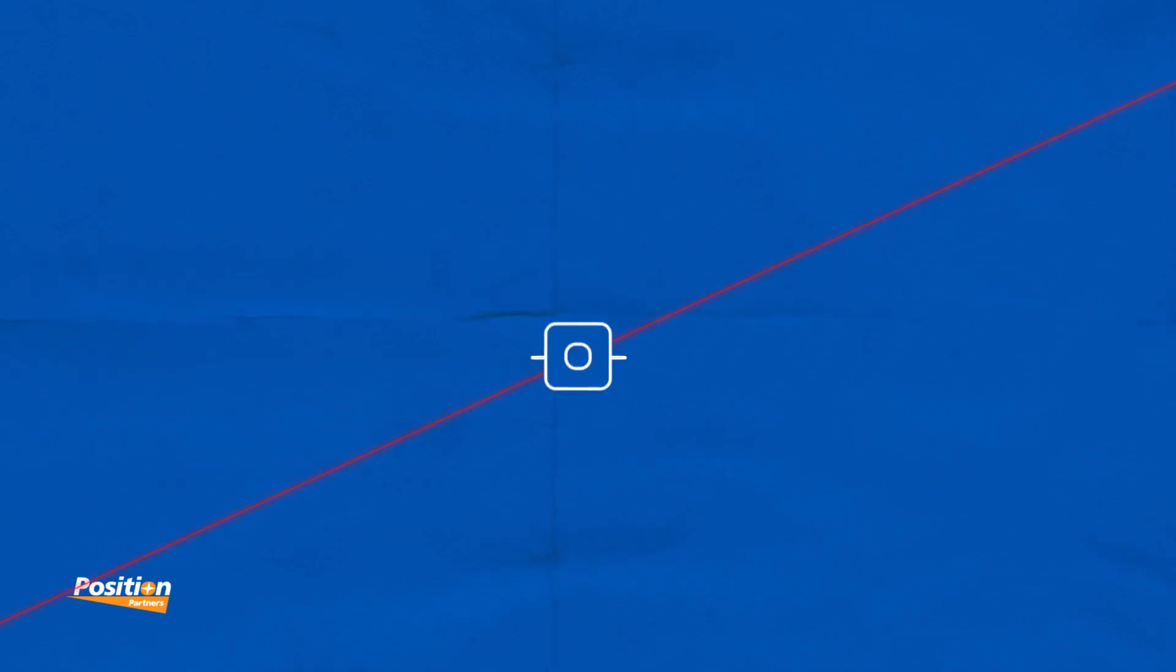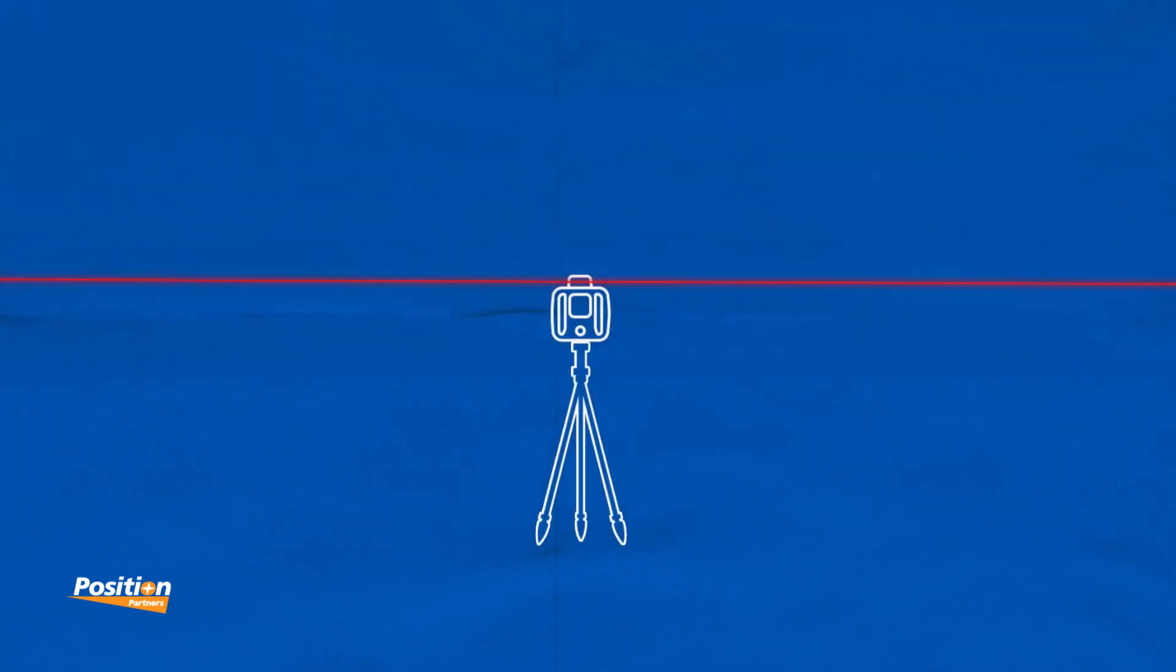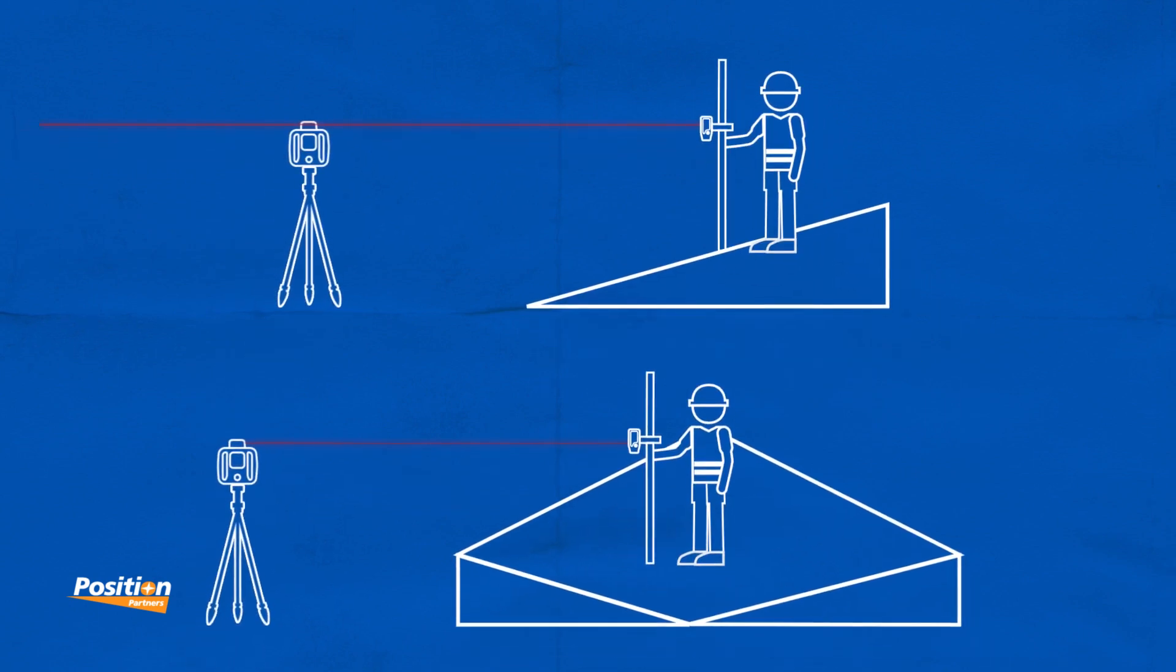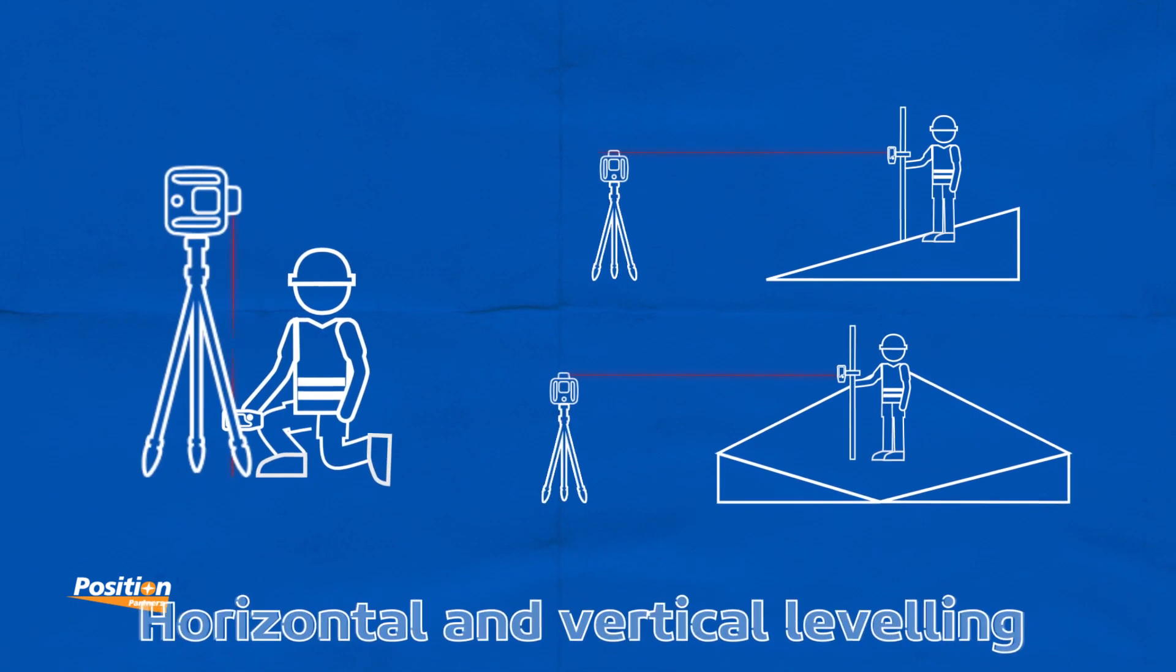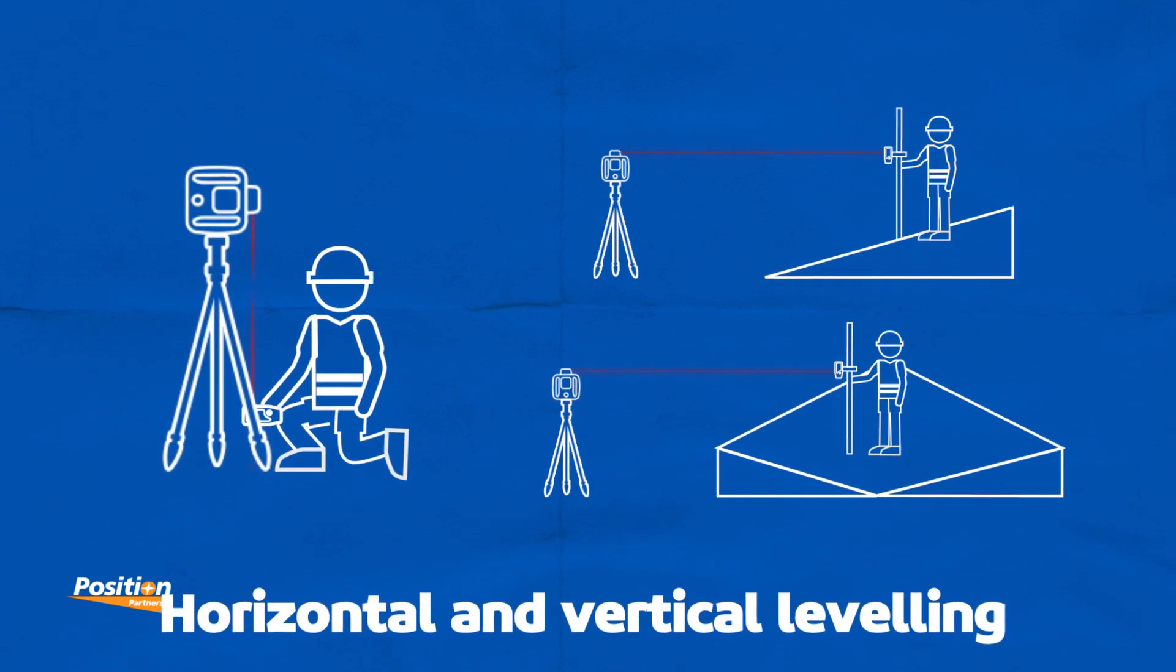Rotating laser levels can operate over long distances up to 800 metres in every direction and in any light conditions. They make working to slopes easy with the ability to enter a single or dual slope as well as vertical or horizontal levelling tasks, making them a great option for all building work.